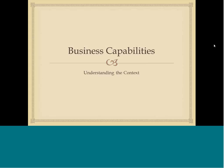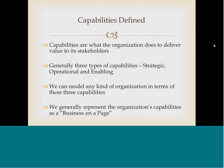Let's begin by discussing business capabilities because this is really our context. Capabilities are what an organization does to deliver value to its stakeholders. Generally we have three types of capabilities: strategic, operational, and enabling. We can model any kind of organization in terms of its capabilities and organize all those capabilities into these three groupings, which we generally do in what we call a business on a page. Taking a capability approach allows you to focus on the business and the business goals, which is the context we always want to adopt when we're doing knowledge management.